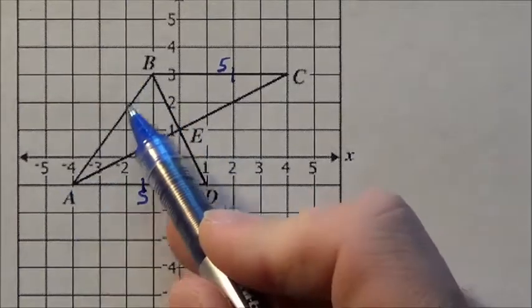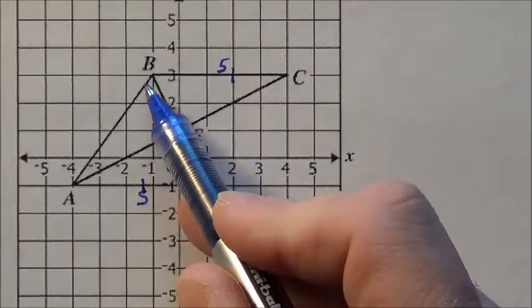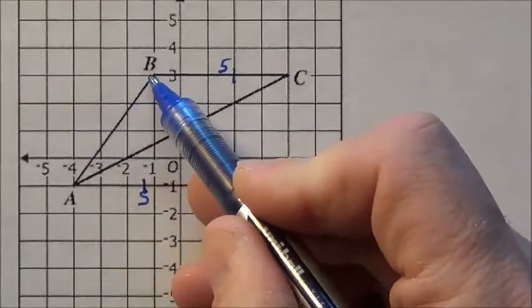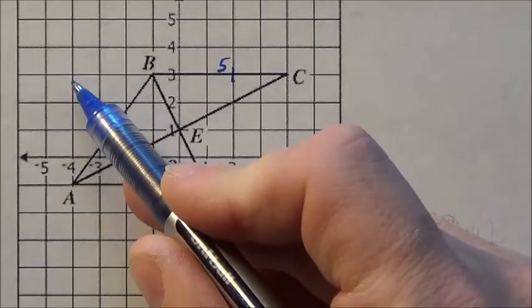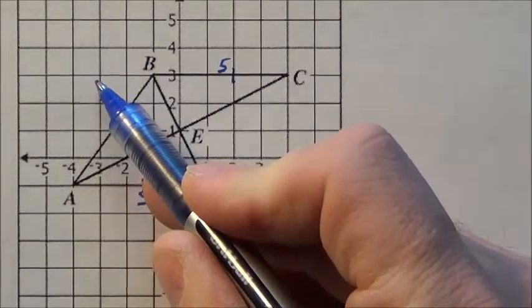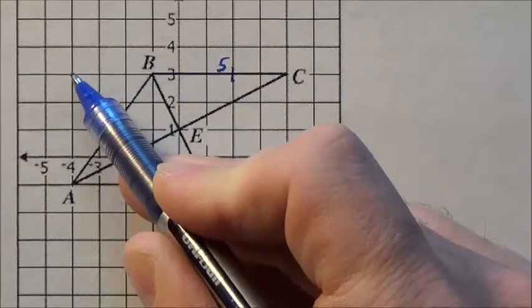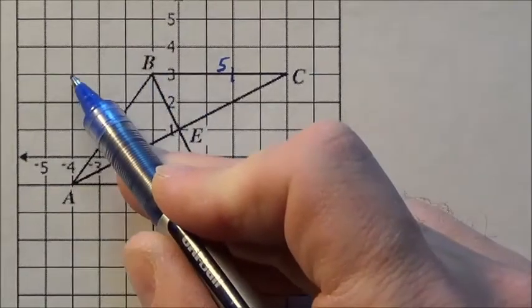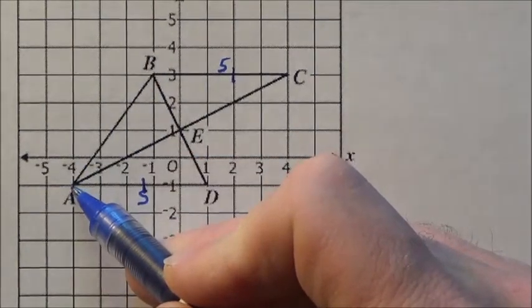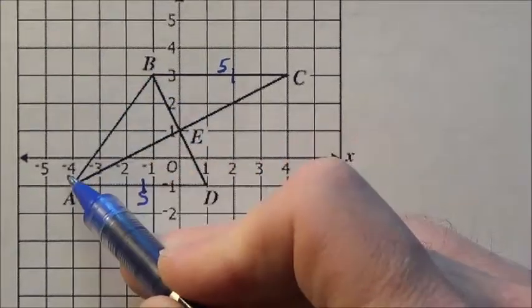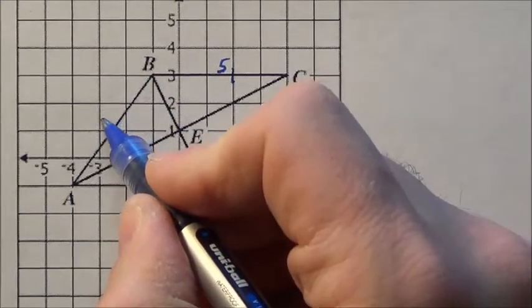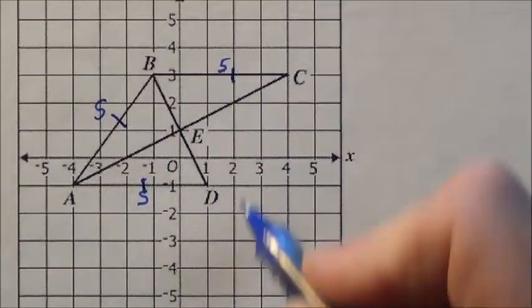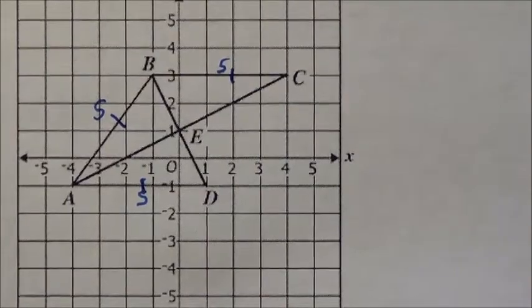Now what about this side right here, AB's length? Well, it's going in a diagonal. It's a little hard to see, but if I look at how much it goes up and over, I'll see that it goes up 1, 2, 3, 4, and over 1, 2, 3. That means if I made a triangle here, it would be a 3-4-5, because 3 squared plus 4 squared equals 25, meaning this hypotenuse would be 5. So this guy would be 5 here.